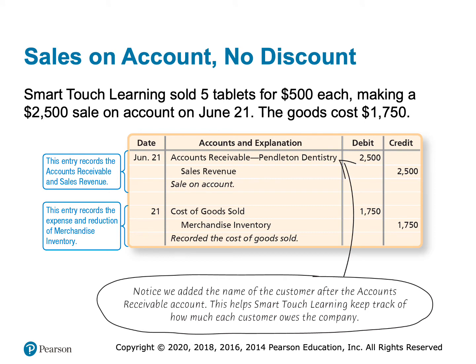We sold 5 tablets on account for $500 each. Since we're the seller, this would be accounts receivable, not accounts payable. Accounts receivable and revenues always go together, so we debit accounts receivable and credit sales revenue for $2,500 — that's 5 tablets times $500 each. Then we do the second entry to debit cost of goods sold and credit inventory for the cost: $350 times 5 gives us $1,750. We use accounts receivable – Pendleton Dentistry because we have a separate accounts receivable account for every customer that owes us money.